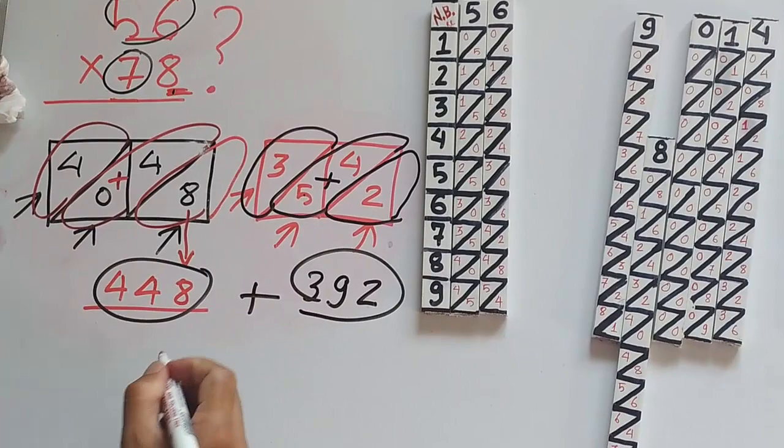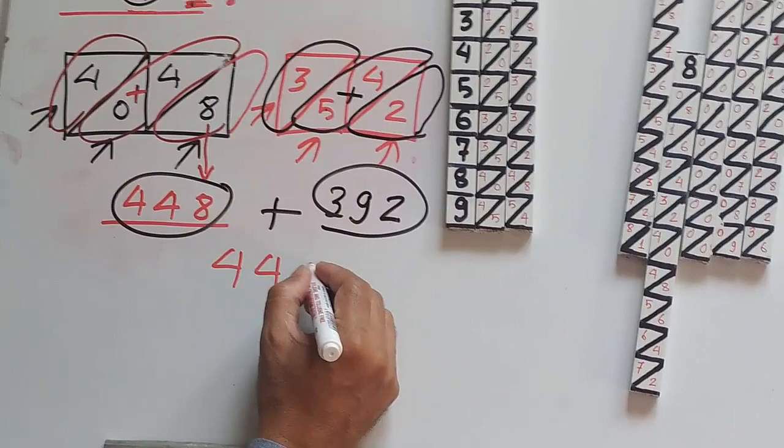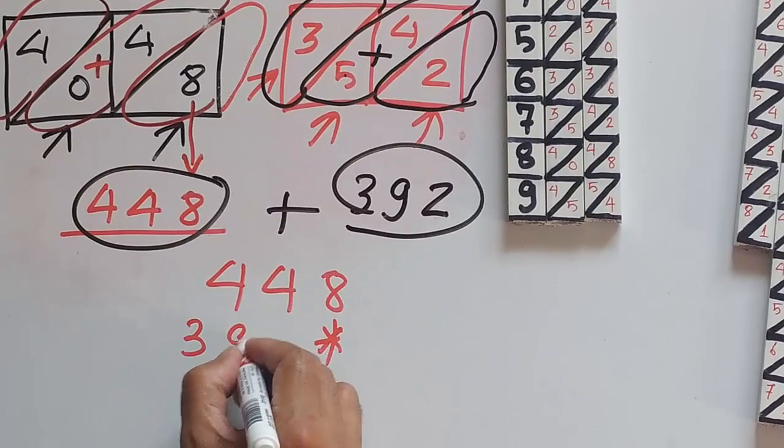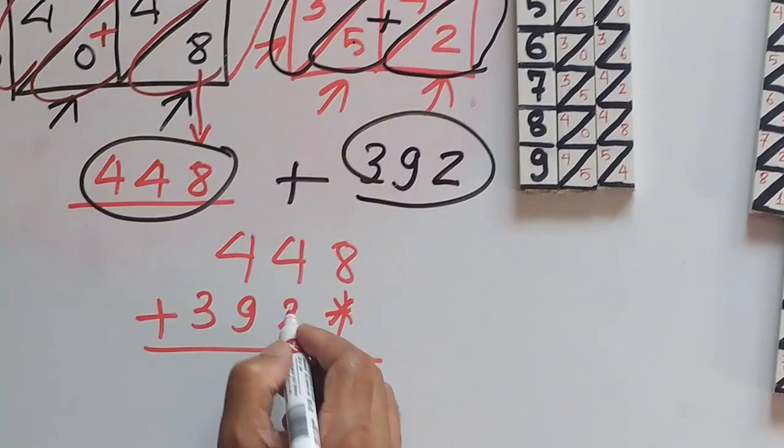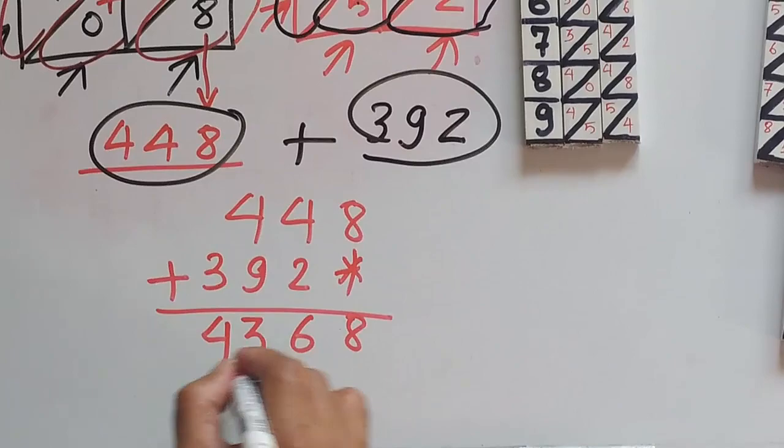Now we have to add them both up. Now let's add 448 plus 392. 8 plus 0 is 8, 4 plus 2 is 6, 9 plus 4 is 13, carry over 1 which makes 4. The final answer is 4,368.